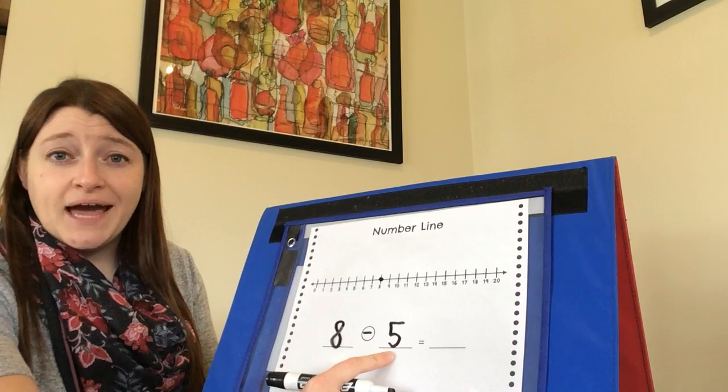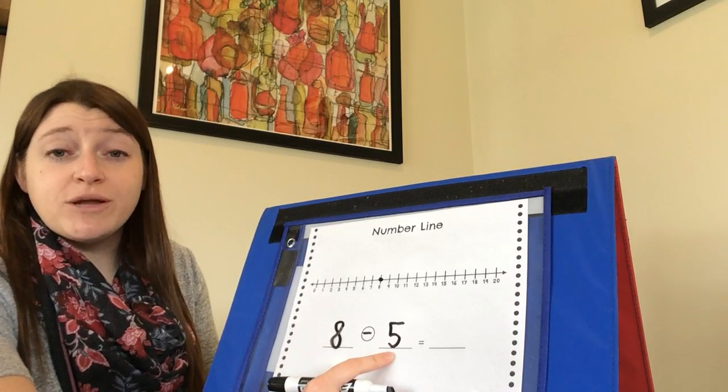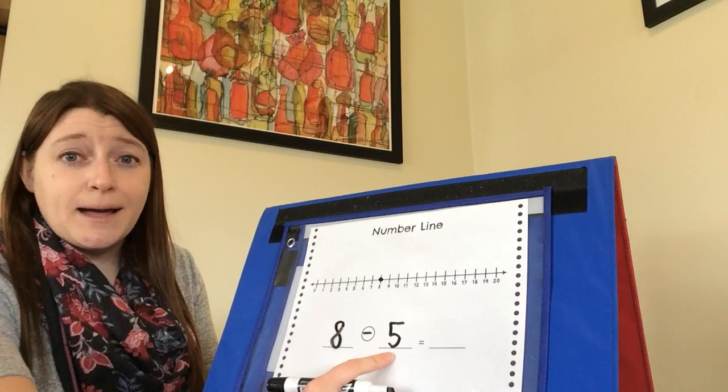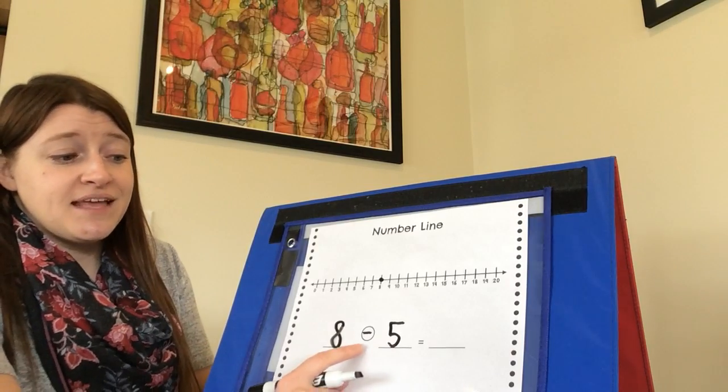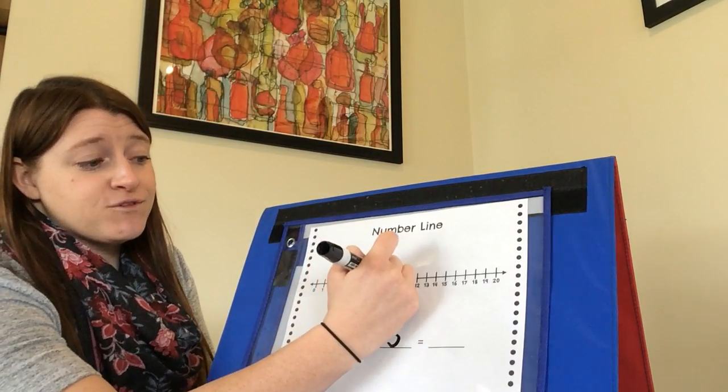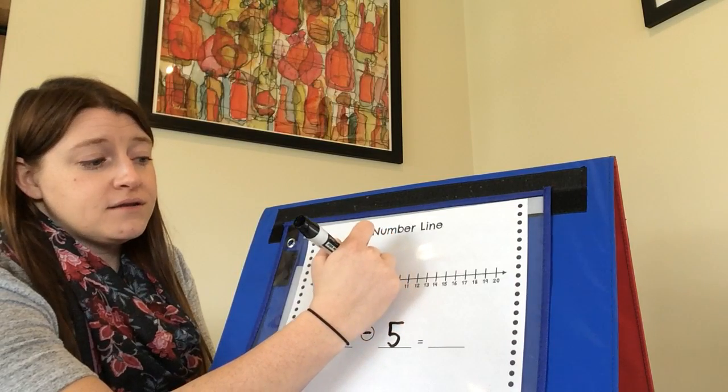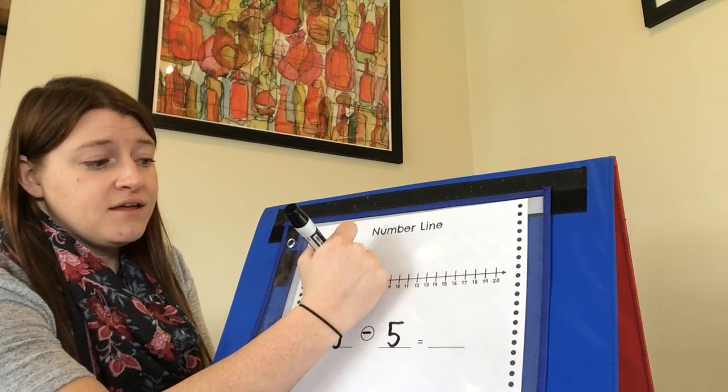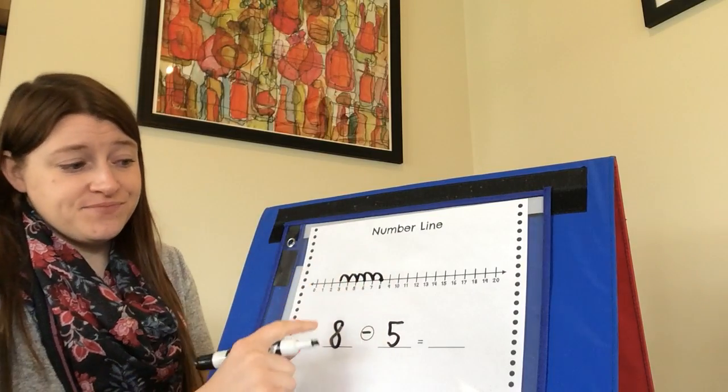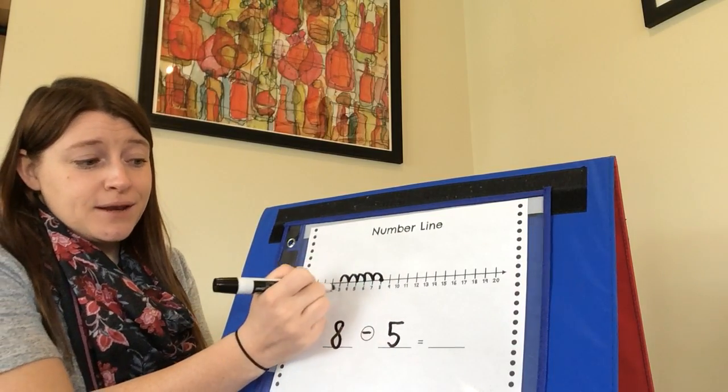The next number tells me how many to take away. So when I'm using a number line, that means I'm going to hop backwards that many times. Hop backwards five times from the number eight where you drew your dot. One, two, three, four, five. I ended on the number three.